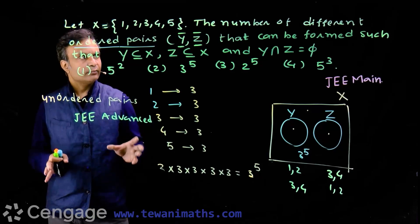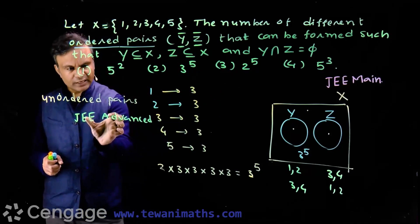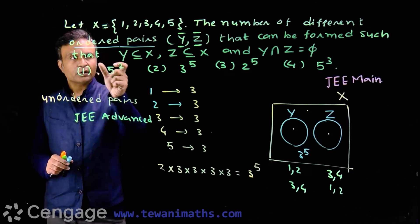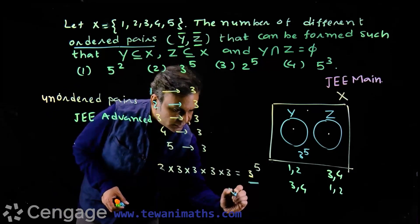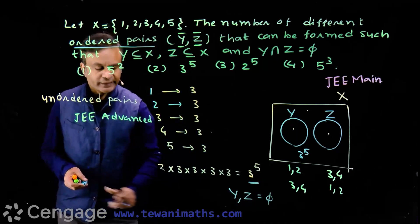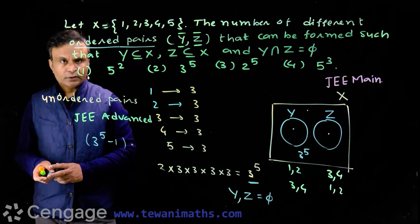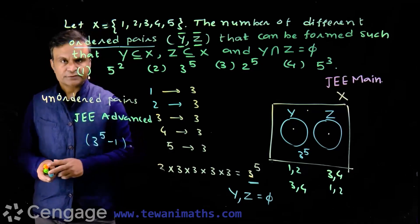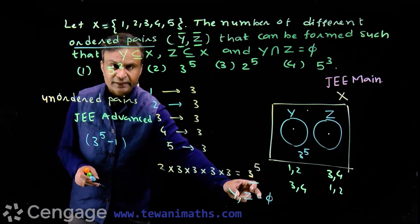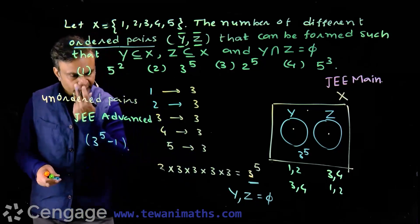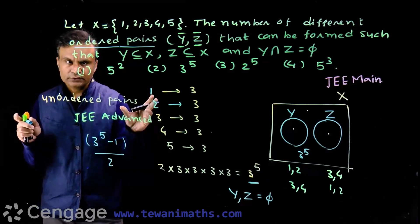Now suppose we want to find the number of different unordered pairs of sets Y and Z which are disjoint — this type of question was asked in JEE Advanced. The total number of ordered pairs is 3⁵. Among these, there is one special case where both sets Y and Z are the null set. Excluding this case, we have 3⁵ - 1 remaining ordered pairs, giving (3⁵ - 1)/2 unordered pairs.